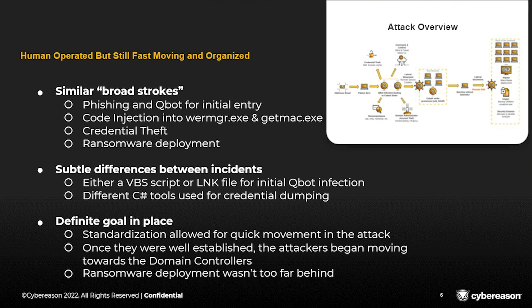The subtle differences that we saw were in the initial entry: you had either a VBS script or a link file or a shortcut file that was used for the initial QBot infection. We're going to look at a link file here in a minute just to show some bits and pieces of how this looks. And then we have a number of C# tools that were loaded into memory and used for various functions, mainly for credential dumping. But we noticed going from incident to incident, sometimes different tools were being used depending on whatever the operator was comfortable with.